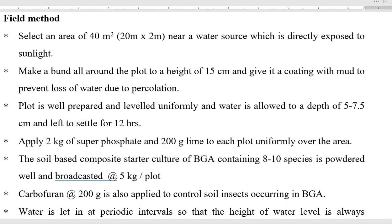After that, 2 kg of superphosphate is added mainly to supply the phosphorus nutrient for BGA multiplication, and 200 g of lime is added to each plot uniformly to adjust the pH of that soil. The soil-based composite culture of BGA — in which 5 to 6 different kinds of cyanobacteria are coexisting, or even 8 to 10 species — is powdered well and broadcasted at the rate of 5 kg per plot.